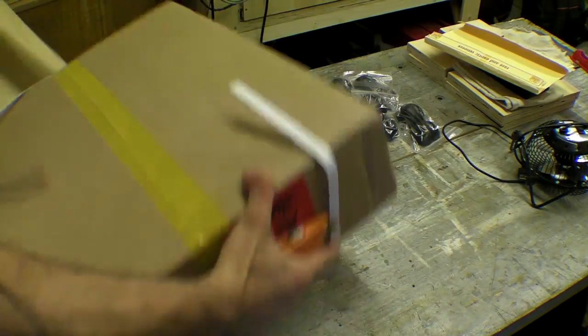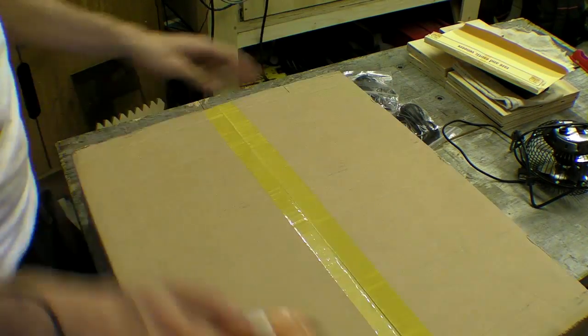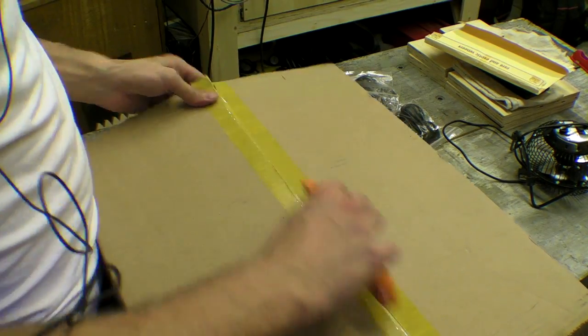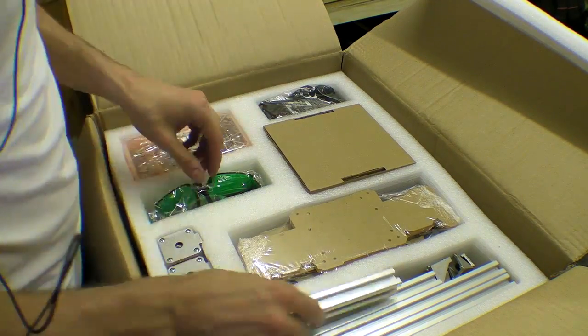In this video I'm going to assemble the ElecMaker 2500mW A5 Mini laser engraver machine which was sent to me from Gearbest.